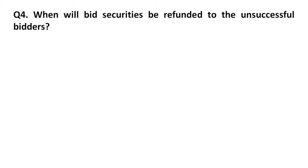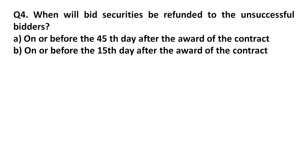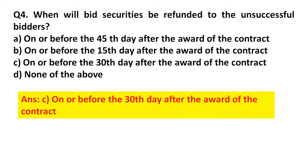Question 4: When will bid securities be refunded to the unsuccessful bidders? Option A: On or before the 45th day after the award of the contract. Option B: On or before the 15th day after the award of the contract. Option C: On or before the 13th day after the award of the contract. Option D: None of the above. Answer: Option C, on or before the 25th day after the award of the contract.